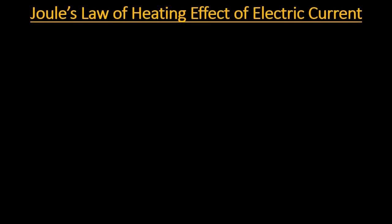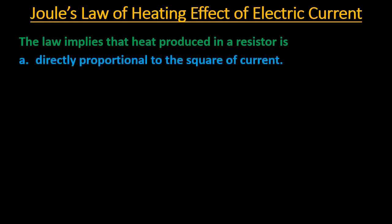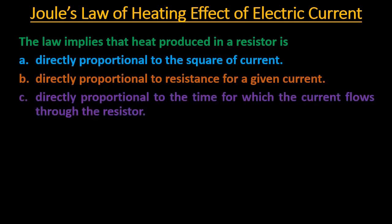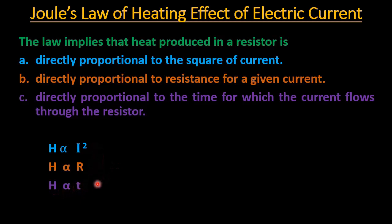The heat produced in any electric circuit depends on the current, the resistance, and the time of flow of current. Joule's law of heating states that heat produced in a resistor is: (a) directly proportional to the square of current, (b) directly proportional to the resistance for a given current, and (c) directly proportional to the time for which current flows through the resistor.